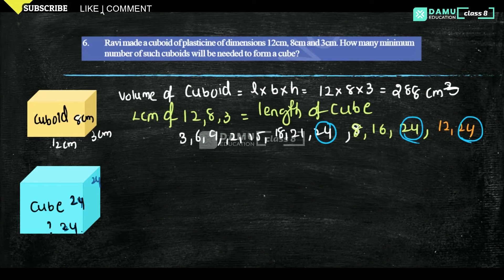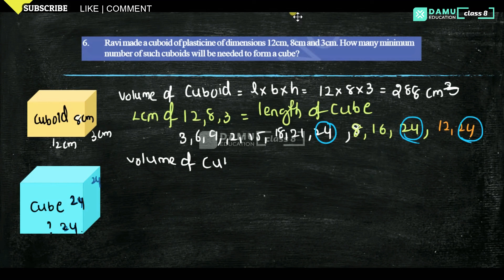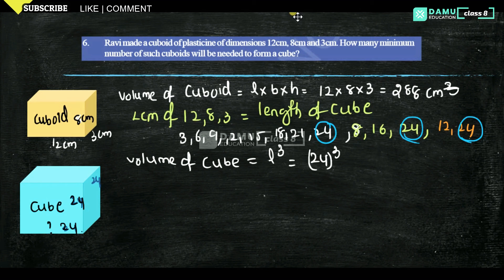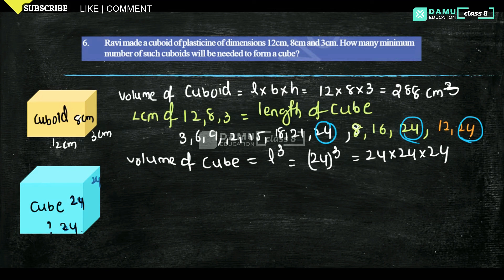So the volume of the cube will be equal to L³, that is 24³, which is 24 into 24 into 24.